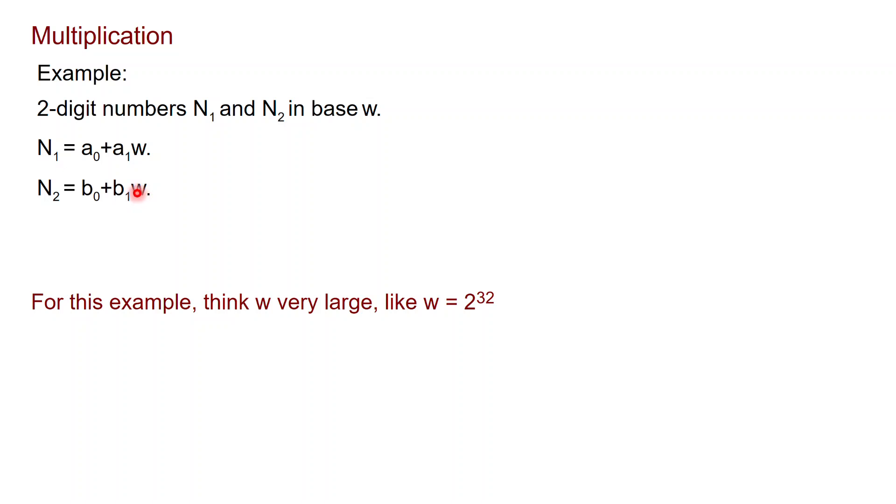So for example, in the familiar basis 10, you can write 27 as 7 plus 2 times 10. So here W is 10, corresponding to this factor here.